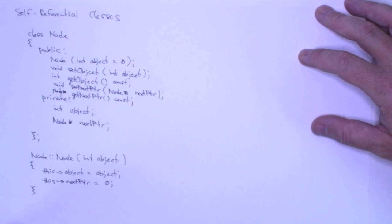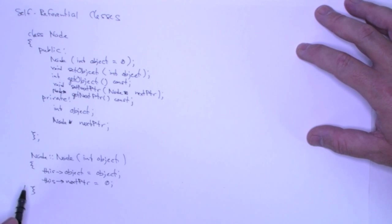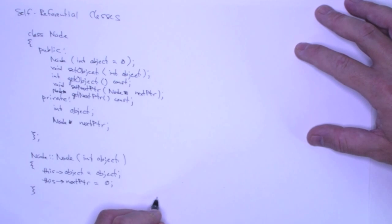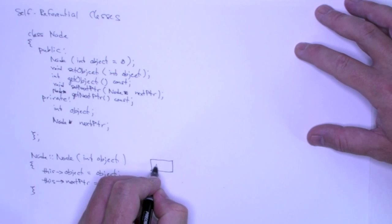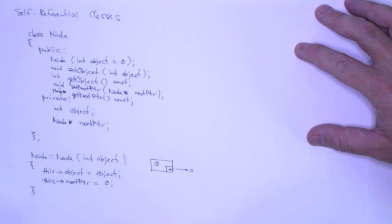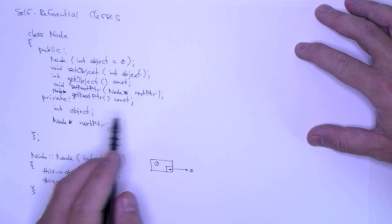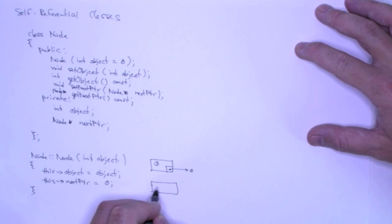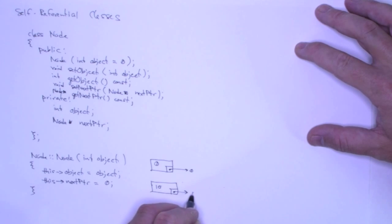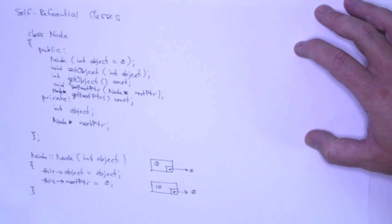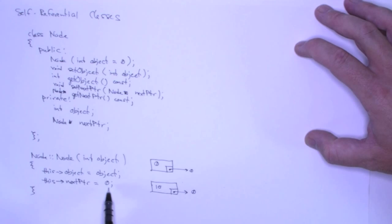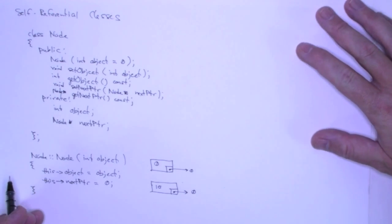When I construct a node using this constructor, if they don't pass in a parameter, then object will be set to zero because of the default argument, and my next pointer will point to null because of this assignment. If someone passes in a parameter to the constructor, let's say 10, then I'll get something that looks like this. But as you'll see, once we start creating these chains, it's critically, critically important to make sure that this pointer points to null. These chains that we're going to construct have to be null terminated.